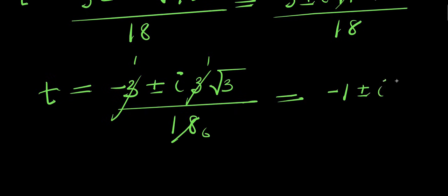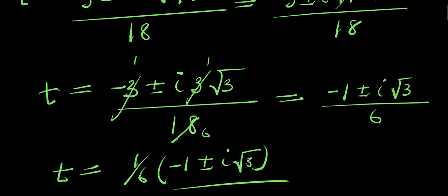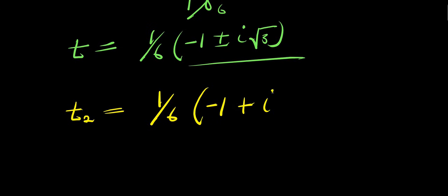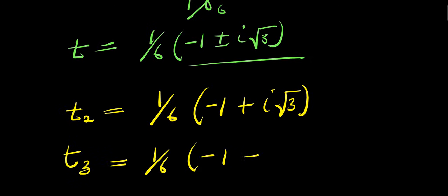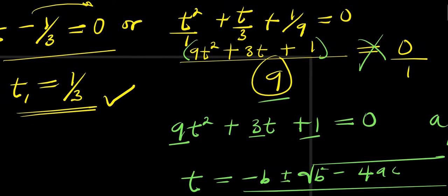So from here, we factor out 3 from the numerator: t equals negative 3 plus or minus 3i times square root of 3, all divided by 18. So we have two complex values for t. t₂ equals 1 over 6 times negative 1 plus i times square root of 3, and t₃ equals 1 over 6 times negative 1 minus i times square root of 3. So these are the two complex values for t, and the real value is t₁ equals 1 over 3.